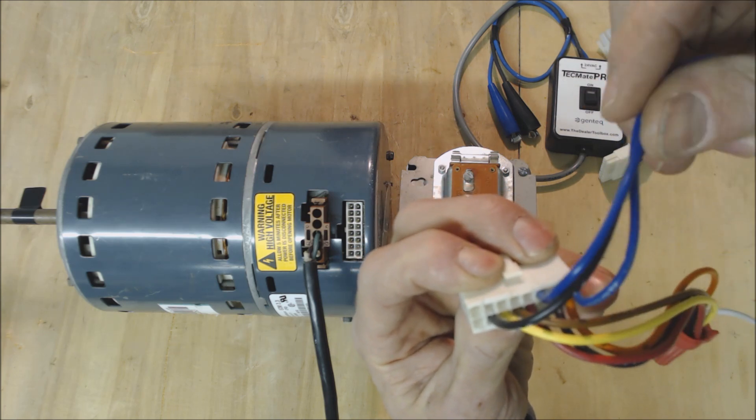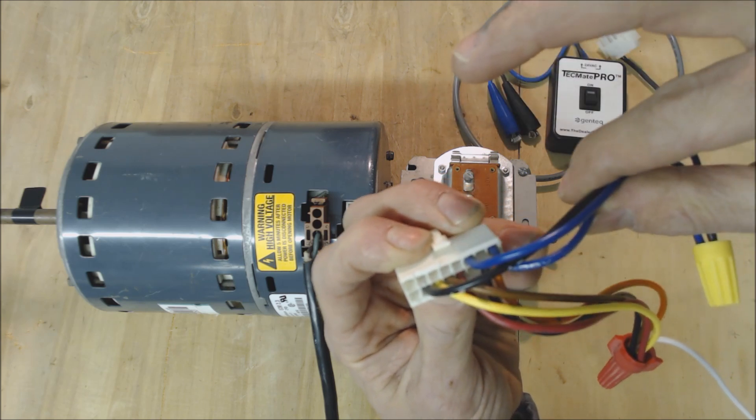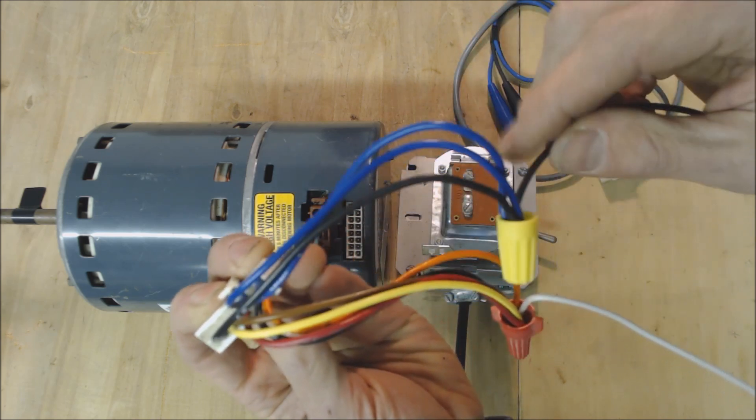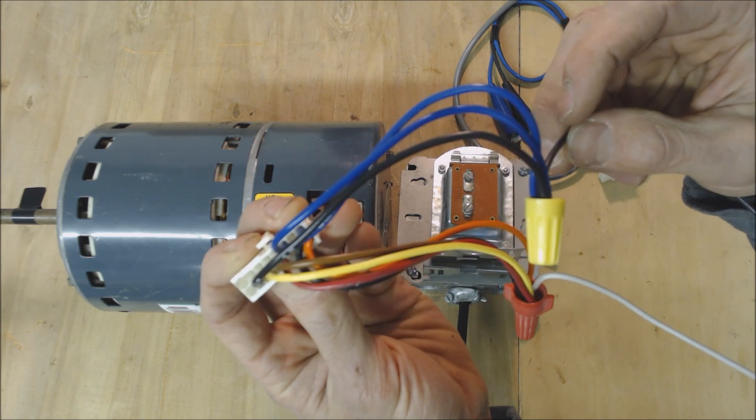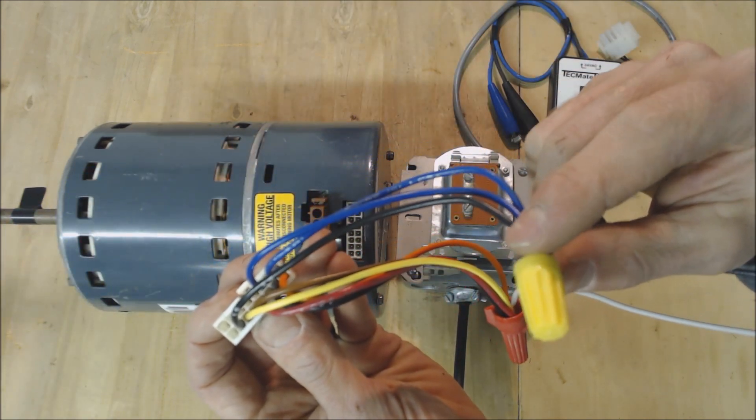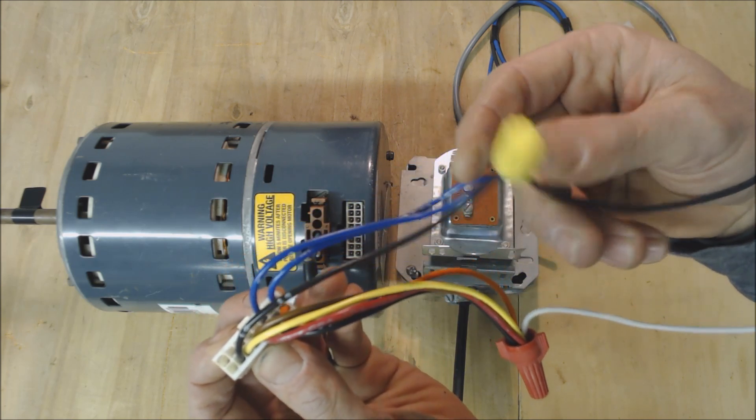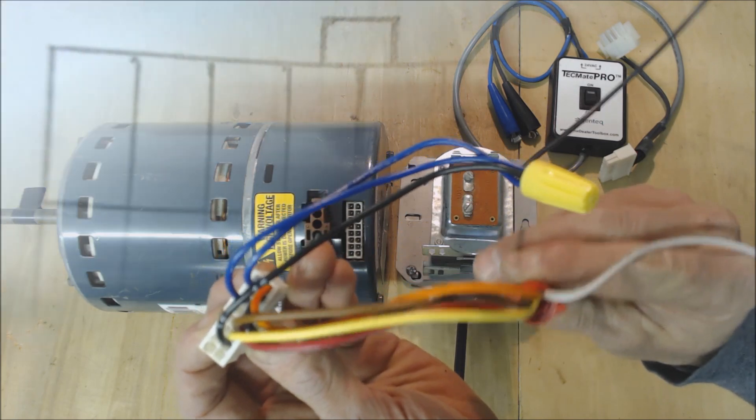So whether this is hot and this is common or whether this is hot and this is common it doesn't really matter. You just want to have them all connected together. If you're going to have a permanent setup I would make it longer than this and I would also go ahead and solder these wires together just to make sure that you don't have a wire falling out of the connector. So that's what I would do.